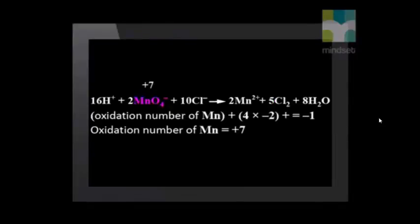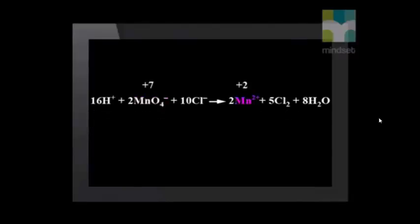We can calculate that the manganese in the permanganate ion has an oxidation number of plus 7, while on the product side of the reaction, the manganese ion has an oxidation number of plus 2. So, the manganese has changed from plus 7 to plus 2. Eventually, when all the permanganate ions have reacted, the purple color disappears. The permanganate has gained electrons and has therefore been reduced. So, the chloride ions have been oxidized by the potassium permanganate.